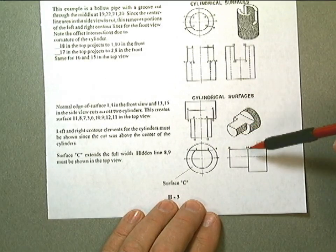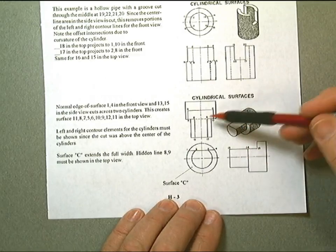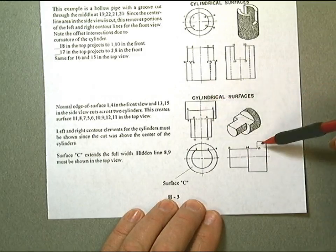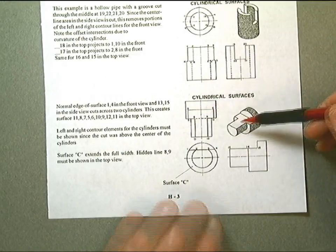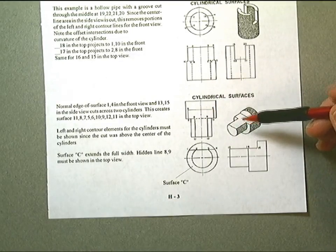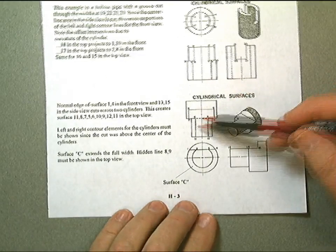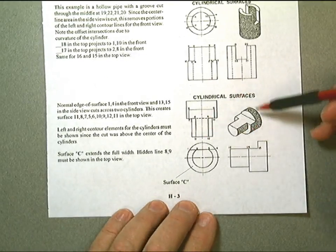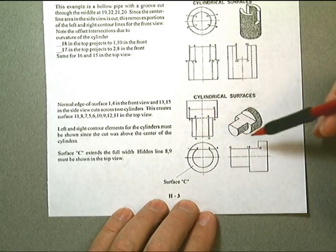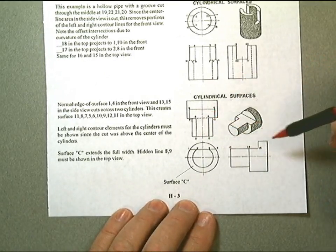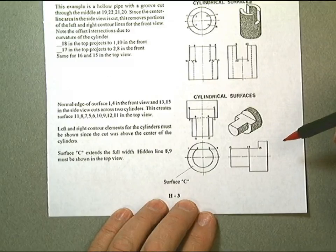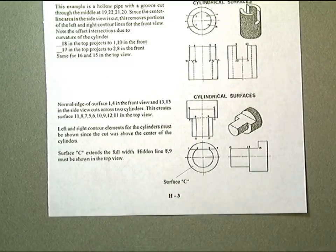Throughout this introduction to cylindrical surfaces, you'll see many examples. It's one of the best ways to begin to interpret and memorize what shapes might look like when we have a cylindrical surface that has a cut on it. It is a special one — make sure it's flat.